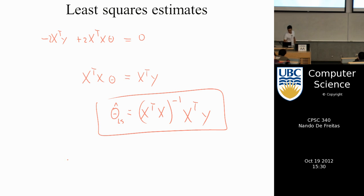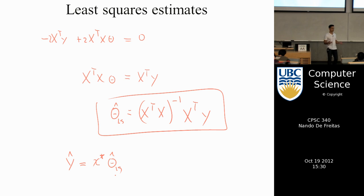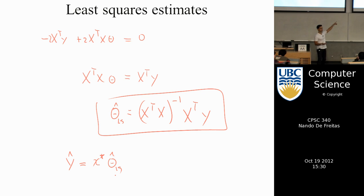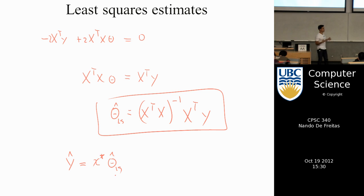In code, you just form matrix X and vector Y. Learning is just writing that one line: (X^T·X)^{-1}·X^T·y, and that gives you theta. Once you have theta, whenever you get a new X and need to make a prediction, you just multiply the new X by theta and you're done.